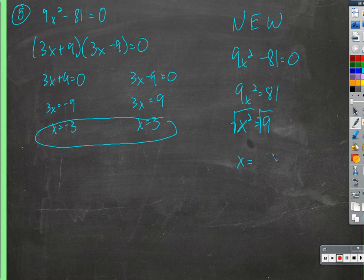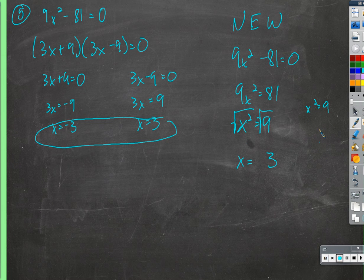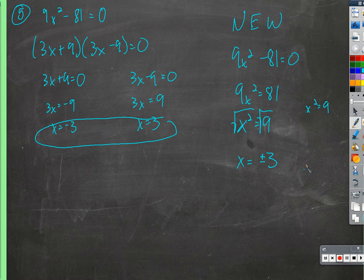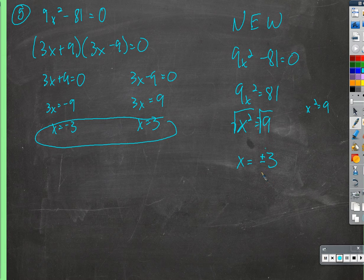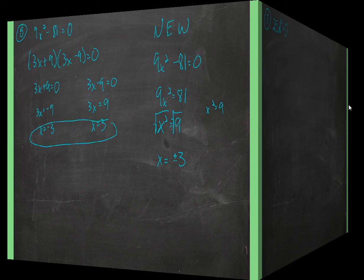You'll notice here we get plus or minus 3. If you just say the square root of 9 is 3, it's true, but we're trying to solve this equation. Any number that can be plugged in for x and make the equation true needs to be reported as a solution. 3 times itself is 9, but also negative 3 times itself is positive 9. So we include both answers, a positive and a negative 3. When we take the square root of both sides, we always include plus or minus — because if we square something positive we get positive, and if we square something negative we also get positive.